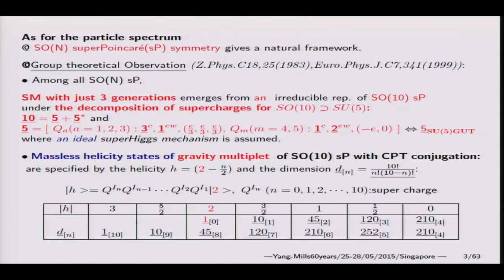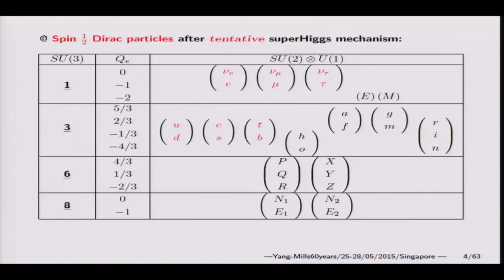There are so many helicities. However, we assume preliminary superhiggs mechanism means that higher helicity states eat lower helicity states as longitudinal components in a gauge invariant way. Then these are the survivors. There are exactly three generations of quarks, leptons, and other semi-bosons.